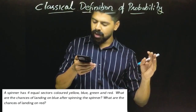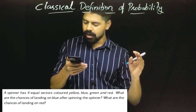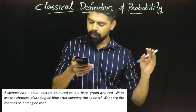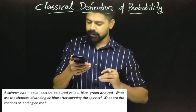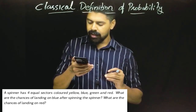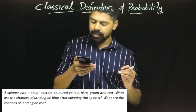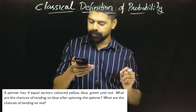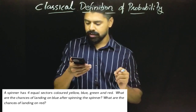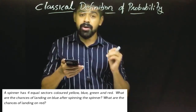A spinner has four equal sectors: yellow, blue, green, and red. What are the chances of landing on blue after spinning the spinner? What are the chances of landing on red?